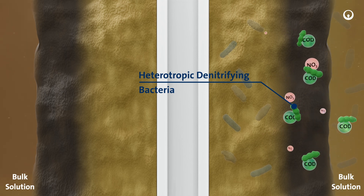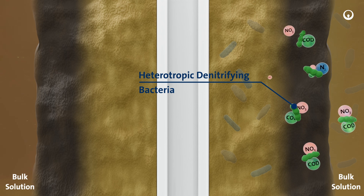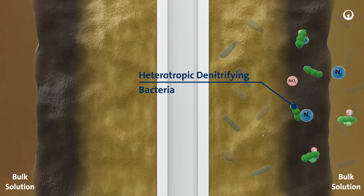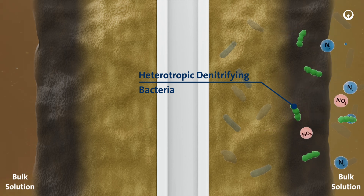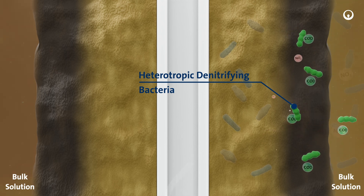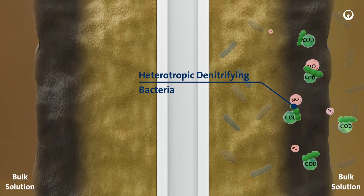ZLUNG cassettes can be installed in the anoxic zone for efficient simultaneous nitrification and denitrification without the need for internal recirculation.